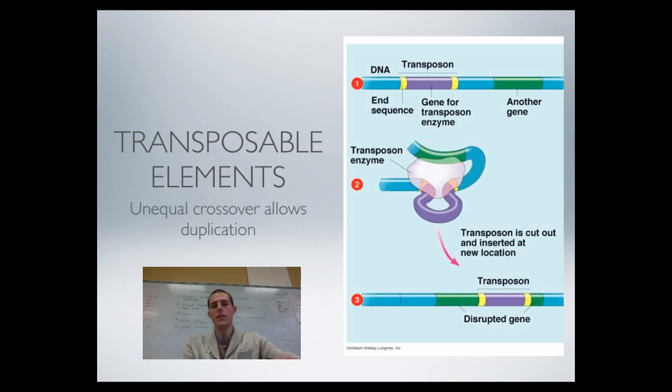So a lot of this mutation, duplication, inversion, all that depends upon transposable elements. A transposable element is a part of a gene or part of genetic material that can be moved to somewhere else.